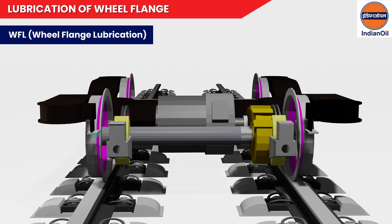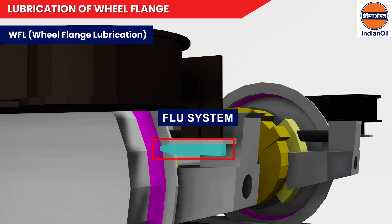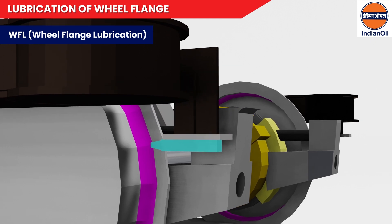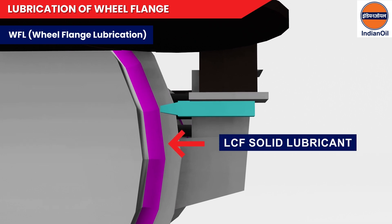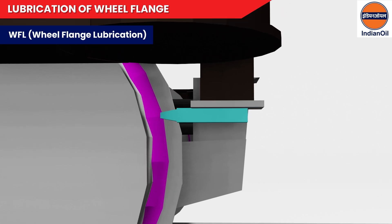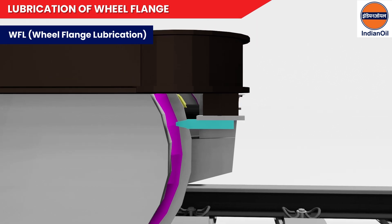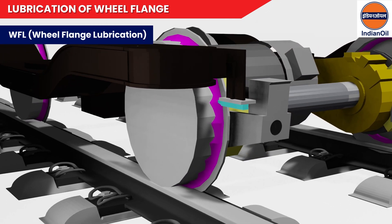Number one: WFL — wheel flange lubrication. The solid stick type FLU system is designed to apply small quantities of a special solid material called LCF (low coefficient of friction solid lubricant) onto the flange of a wheelset. As the wheelset rotates, this LCF material is deposited onto the corner of the rail head, acting as a lubricant for all vehicles that pass over the rail. Products of this type are used to reduce wheel flange wear and rail gauge corner wear.